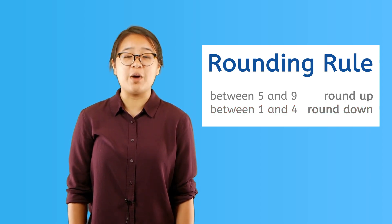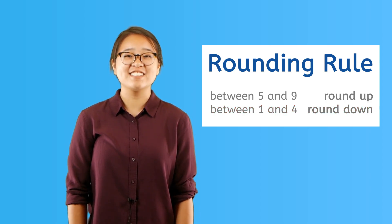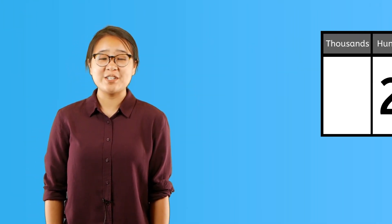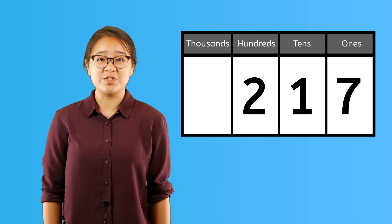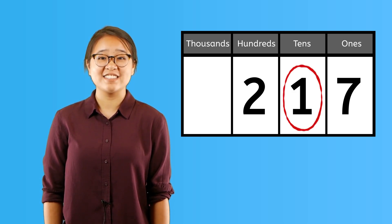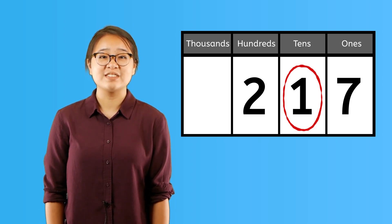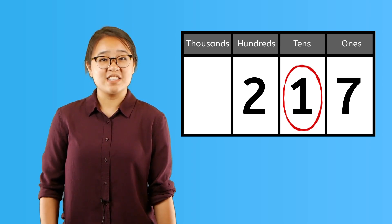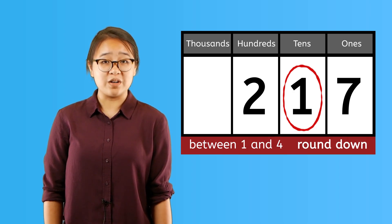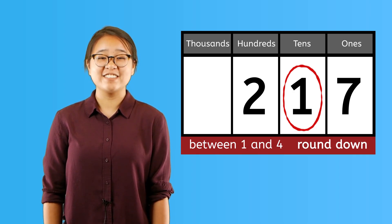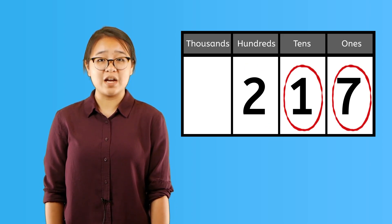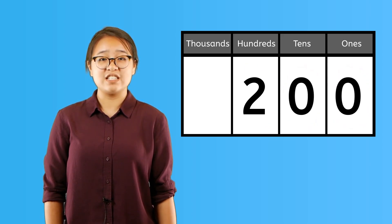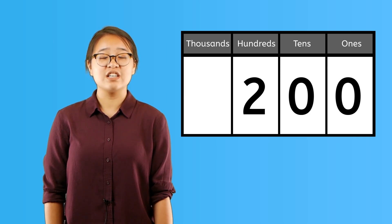Now let's round numbers with the help of a place value chart. Here is the number 217. If we round this number to the nearest hundred, we need to look at the digit to the right — in this case, the 1 in the tens place. Since the number in the tens place is between 1 and 4, we round down. The number in the hundreds place remains the same, and the number to the right becomes 0. 217 rounded to the nearest hundred is 200.